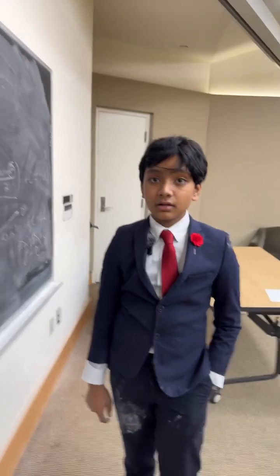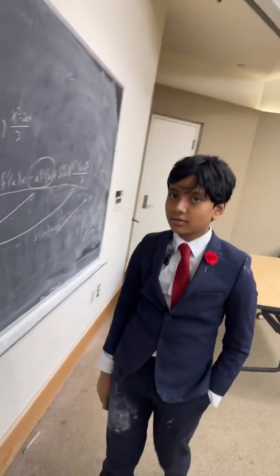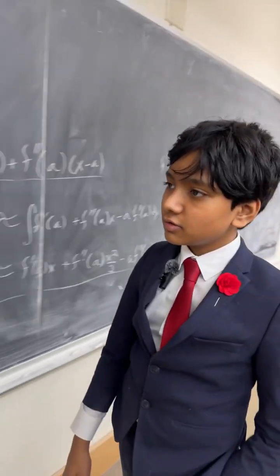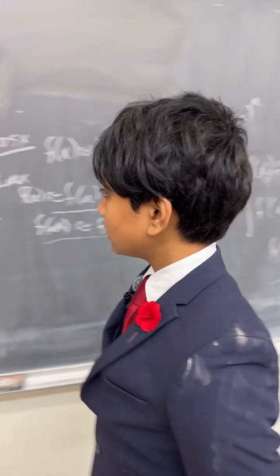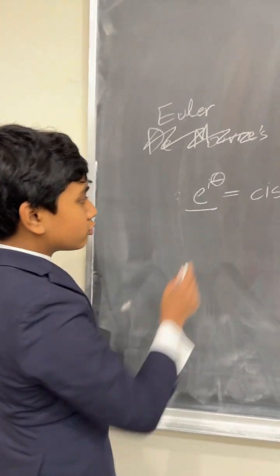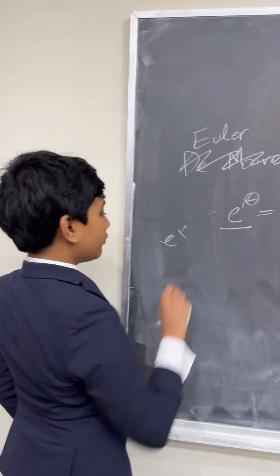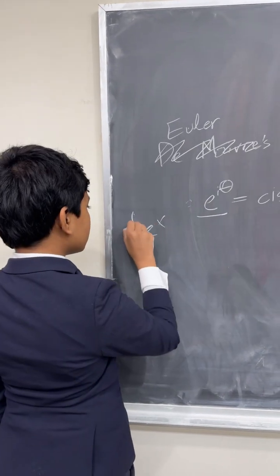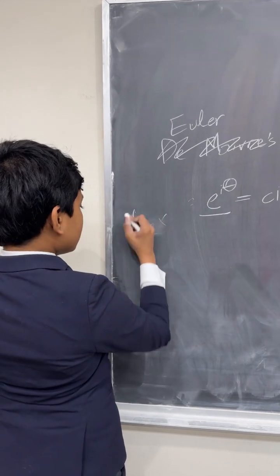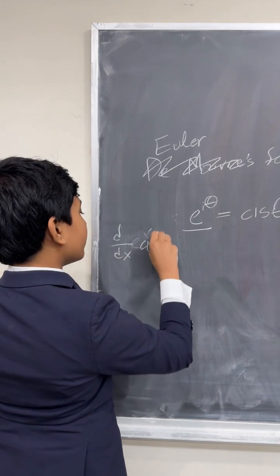So, now, what happens if we plug in e? e to the x equals e to the x times ln e, which is just 1. So, that means we get d/dx of e to the x equal to e to the x. And this is true for any order of the derivative.